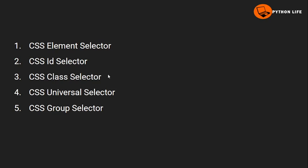There are five different types of CSS selectors: first, the element selector; second, the ID selector; third, the class selector; fourth, the universal selector; and fifth, the group selector. We will go through each one by one.